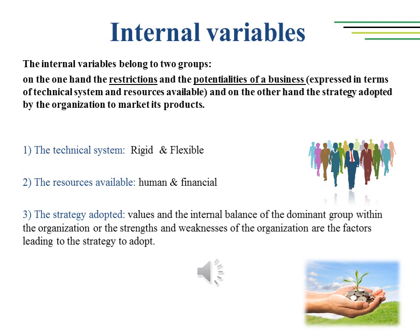The internal variables influencing the market function essentially belong to two groups: on the one hand, the restrictions and the potentialities of a business expressed in terms of technical system and resources available, and on the other hand, the strategy adopted by the organization to market its products. The technical system: changes in production systems do have an influence on the evolution of an organization's marketing approach, especially depending on the degree of rigidity or flexibility of the technical system. In the case of rigidity, it can bring about an increase of resources aimed at marketing information, so as to decrease the risks of poor choices and define successful operative policies. In the case of high flexibility of the technical system due mostly to the use of new technologies, the organization can vary the quality of its product and its supply, and so reach a successful strategic cognitive marketing approach.